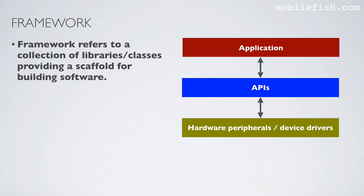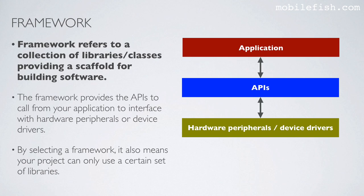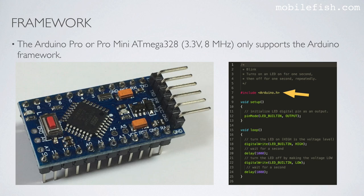A framework refers to a collection of libraries or classes providing a scaffold for building software. The framework provides the APIs to call from your application to interface with hardware peripherals or device drivers. By selecting a framework, your project can only use a certain set of libraries. For example, the Arduino Pro or Pro Mini ATmega328 only supports the Arduino framework, so in your code you must include the Arduino header file.